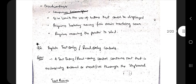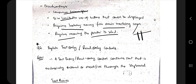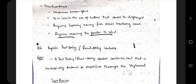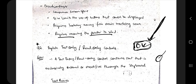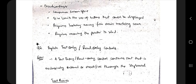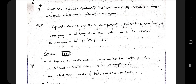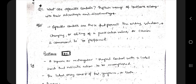Some disadvantages of buttons include: consumes screen space, size limits, requires looking away from the main working area, and requires moving the pointer to select. For example, if a button is positioned far away, you need to drag the mouse there, which takes time — even small things like that count as a disadvantage. So that was the first question on operable controls.